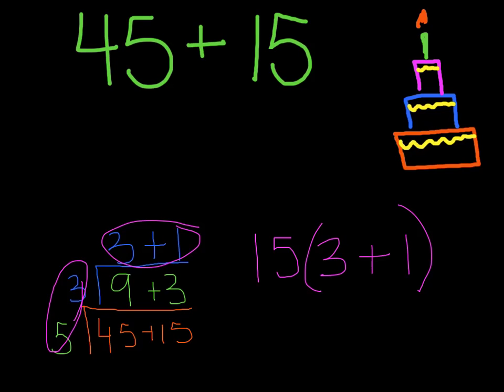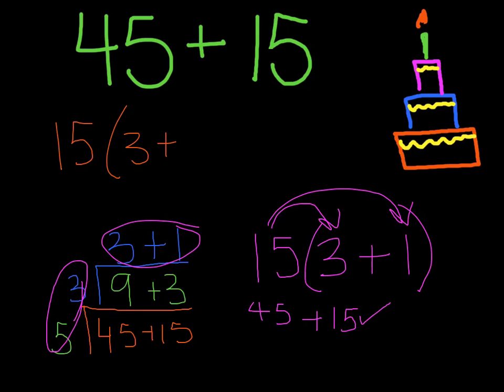Now I can actually apply the distributive property to double check my work. So if I do 15 times 3 and 15 times 1, I would get 45 because 15 times 3 is 45, and then 15 times 1 is just 15. So I have 45 plus 15, so it does check. So my final answer is 15 times 3 plus 1.